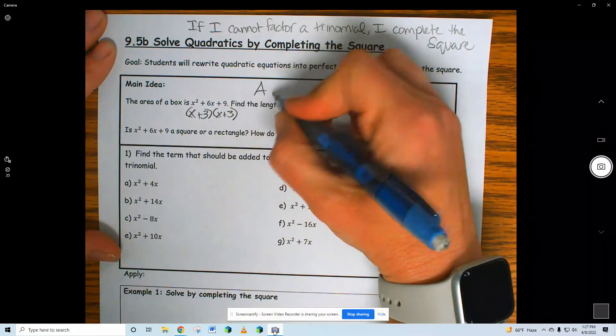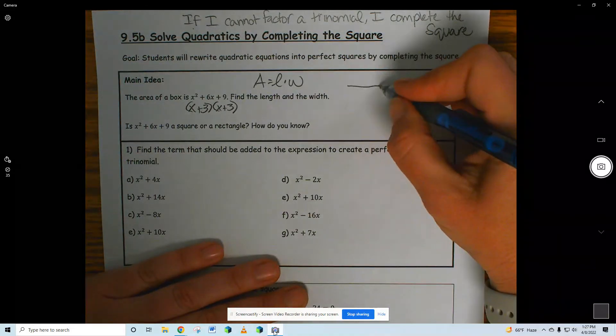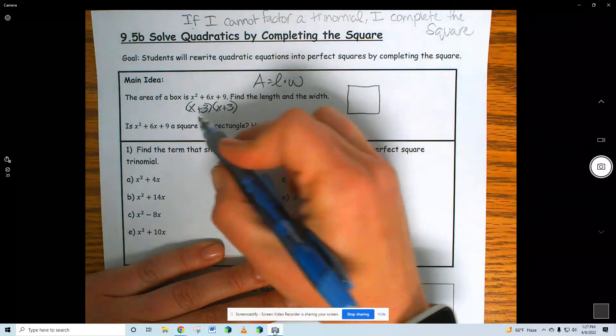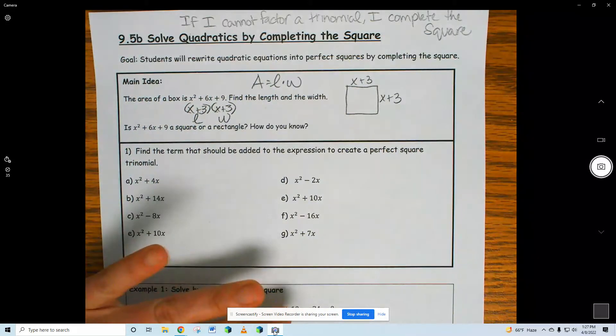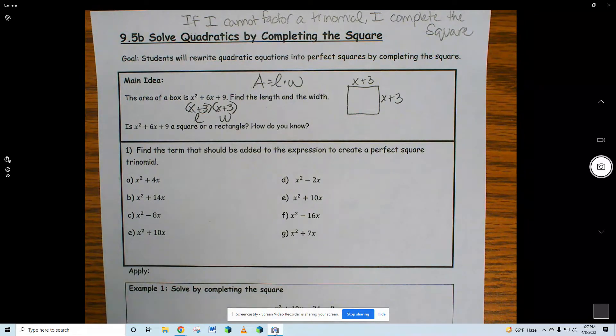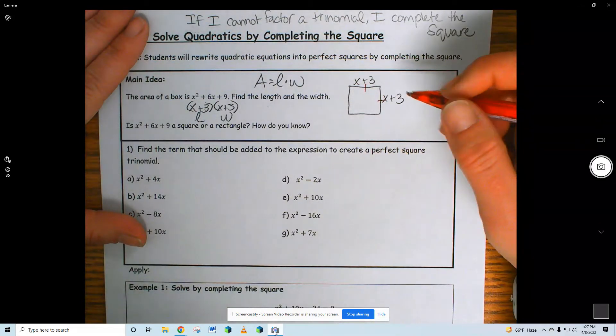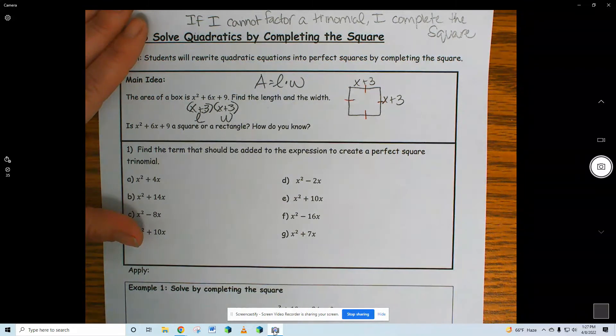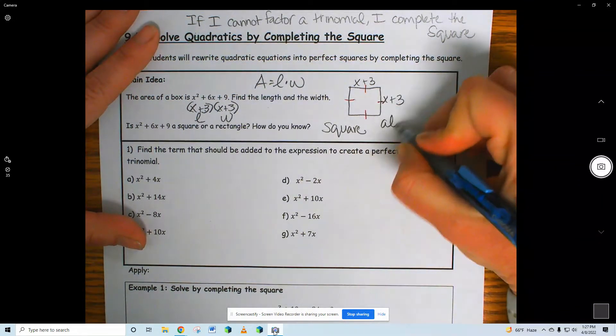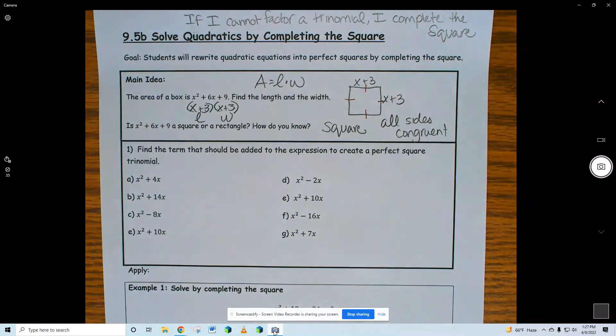Now this is the area of a box. Area is length times width. So length times width is going to be like the length would be x plus 3 and the width would be x plus 3. So is this a square or rectangle? It's a square because isn't it true that if these two sides are congruent, then all four sides must be congruent. Square, all sides are congruent on a shape.